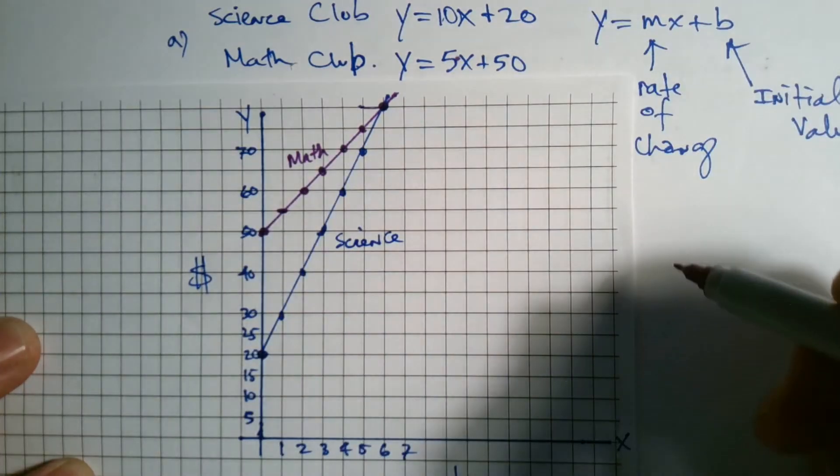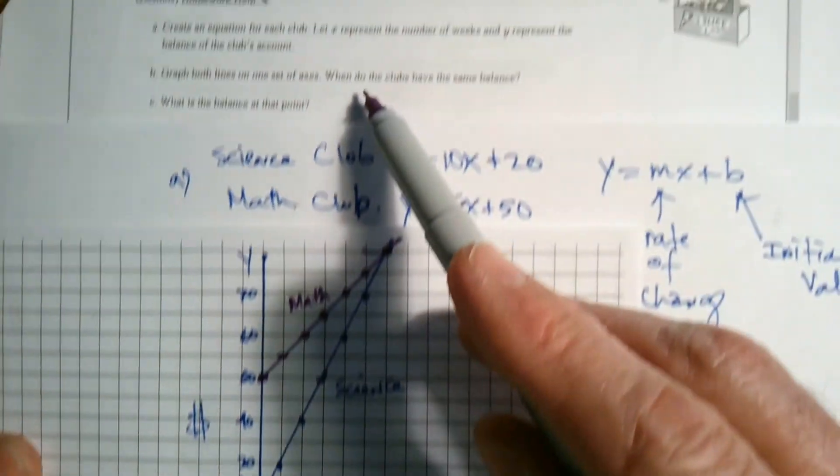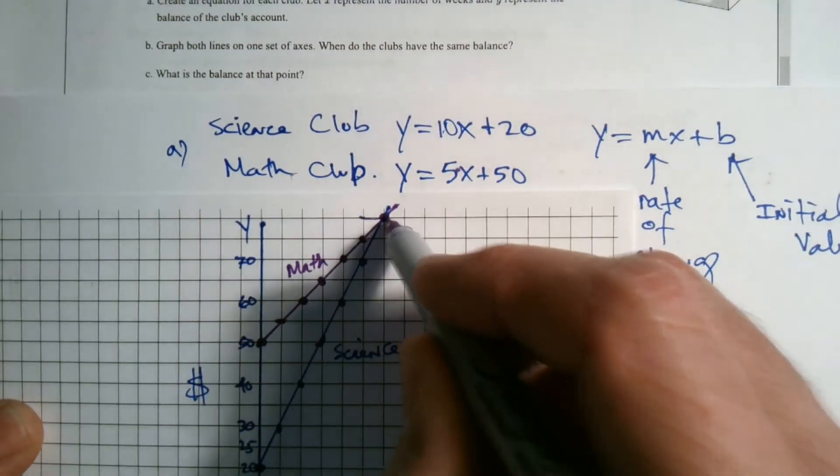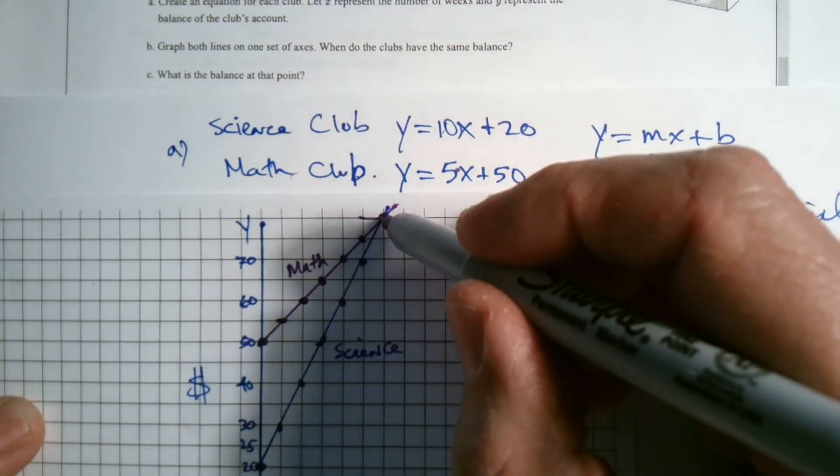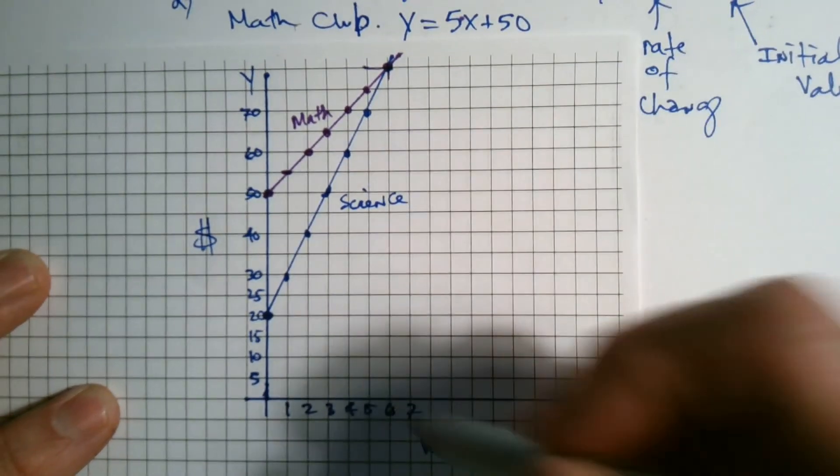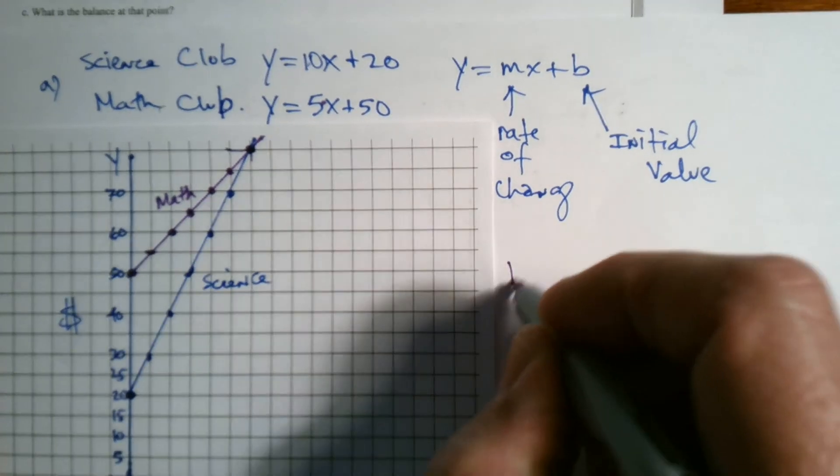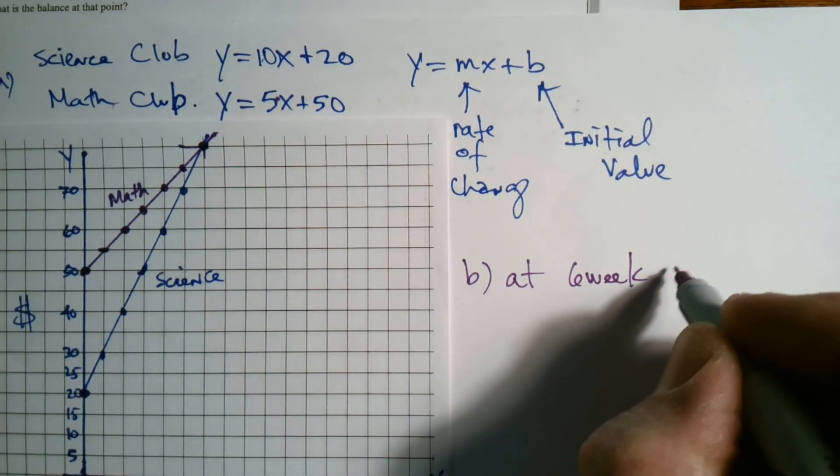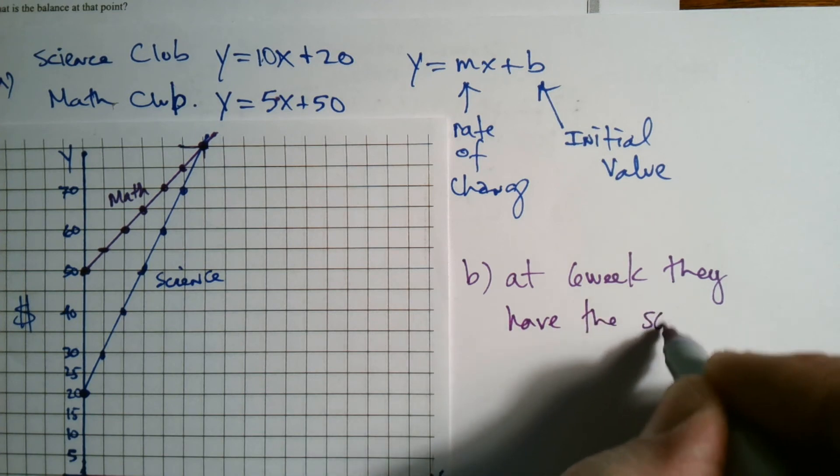There's my graph of each of these. So I can label them math for that one and science for this one. And I've got my equations. So there's my graph. So it asks the question in part B: when do the clubs have the same balance? Well, the same balance would be where they intersect. So that did just fit on my graph. If I follow that point down, where did they have the same balance? It's at 6. So for my part B, not only do I need the graph, but I would say at 6 weeks they have the same balance.